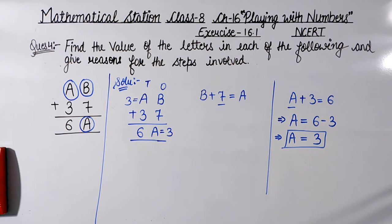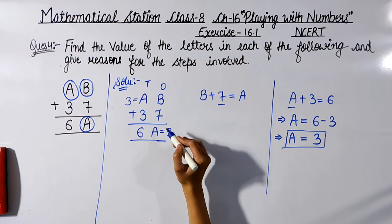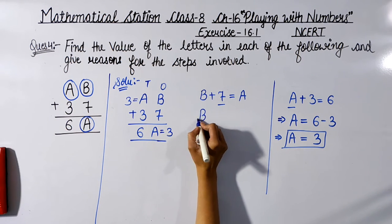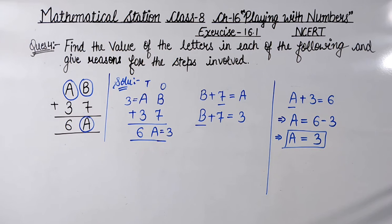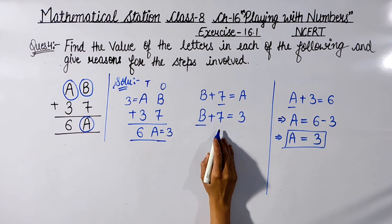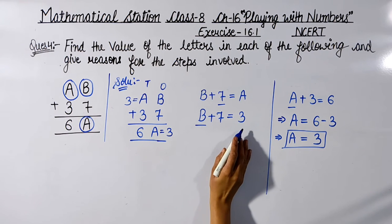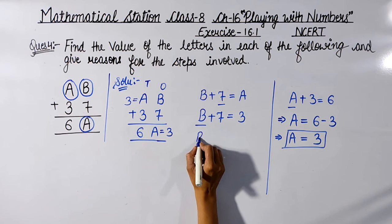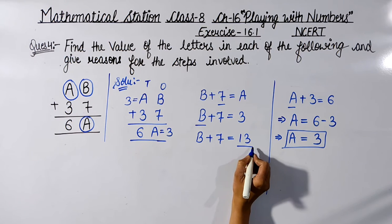Now revisiting the ones column: B + 7 = A, and A = 3, so B + 7 = 3. But we need a number for B such that when added to 7 the answer is 3. Since 7 is already larger than 3, adding anything to 7 will make it even bigger — so B + 7 = 3 is not possible. Therefore it must be B + 7 = 13.